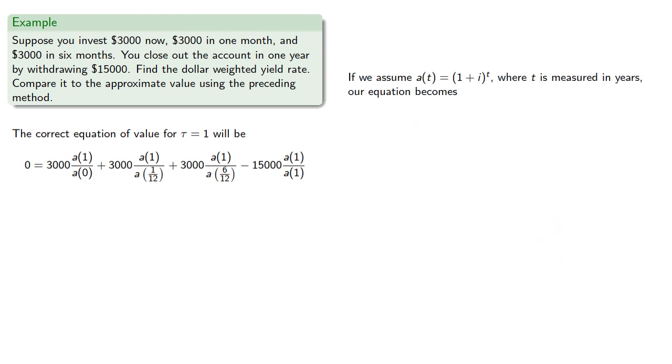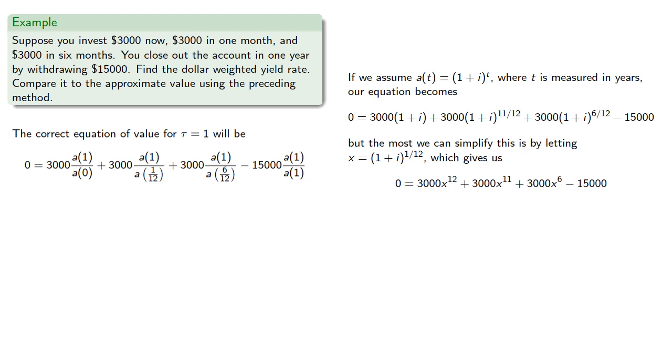If we assume our accumulation function has the form 1 plus i to the power t, where t is measured in years, our equation becomes... But the most we can simplify this is by letting x equal 1 plus i to the twelfth, which gives us a twelfth degree equation, which has no algebraic solutions. Instead, we'll have to find a numerical solution. So we find...